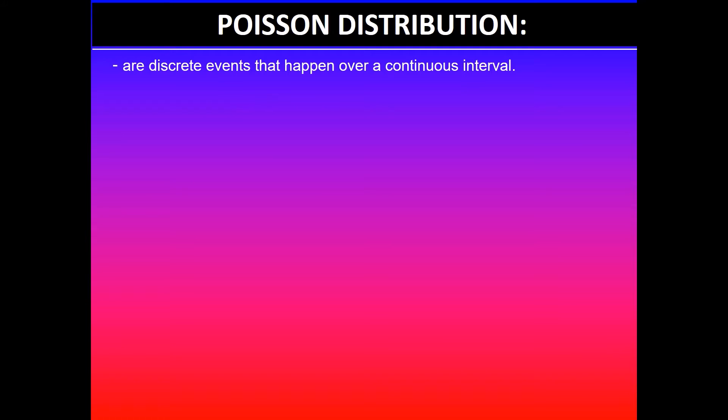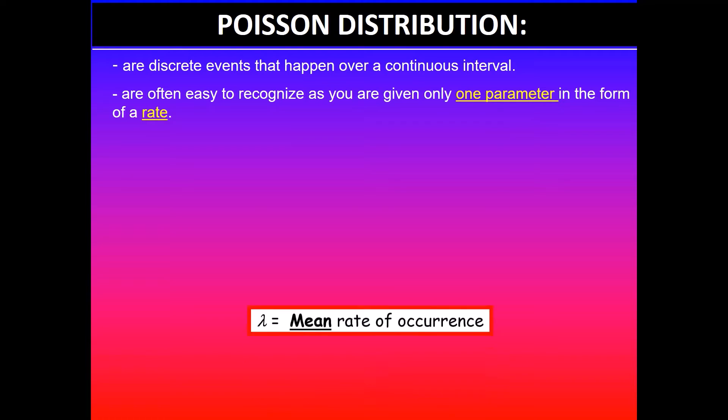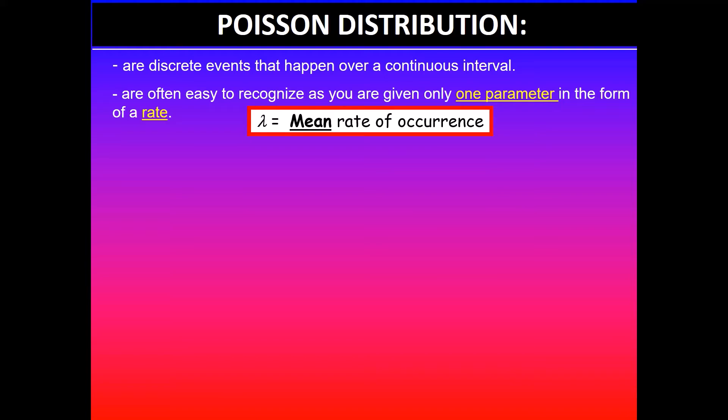Poisson distributions are discrete events that happen over a continuous interval. This one is easy to recognize as you will be given only one parameter in the form of a rate, and lambda is the mean rate of occurrence. This is the one parameter you will need to be given to use Poisson distribution.